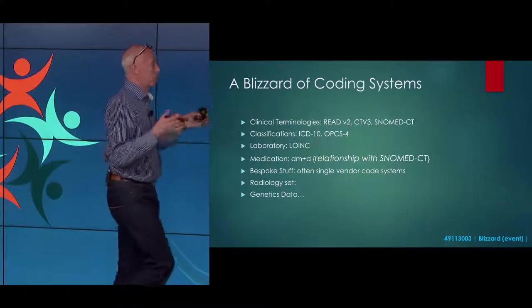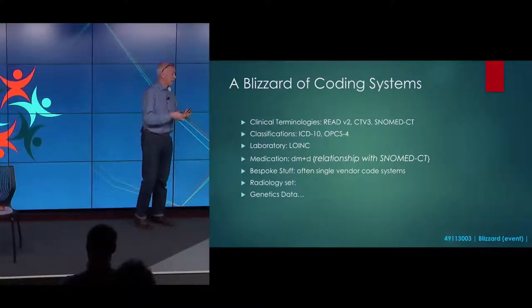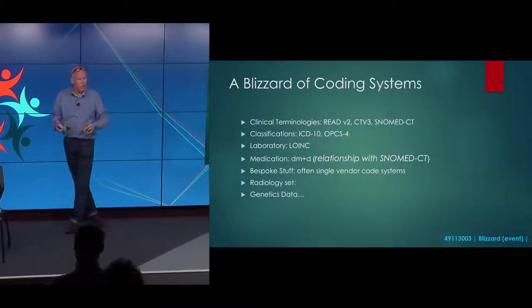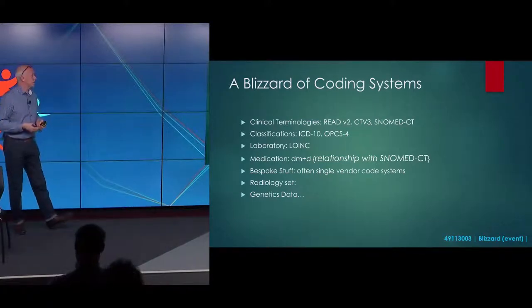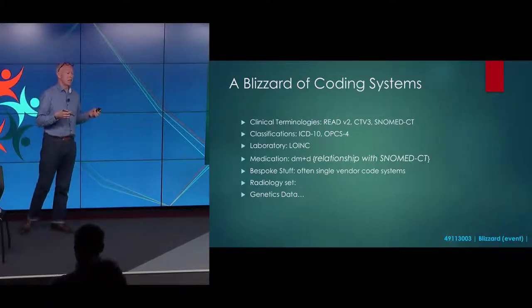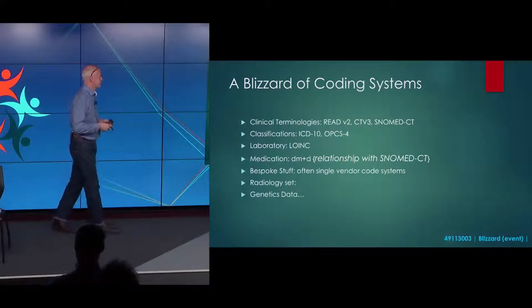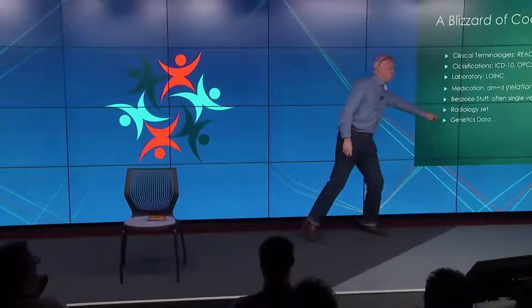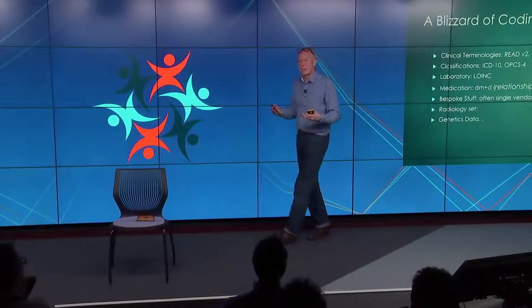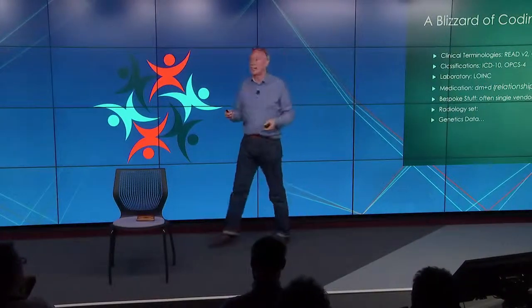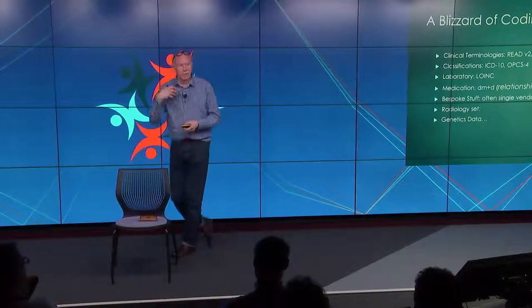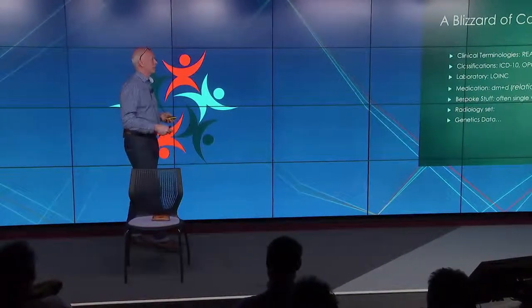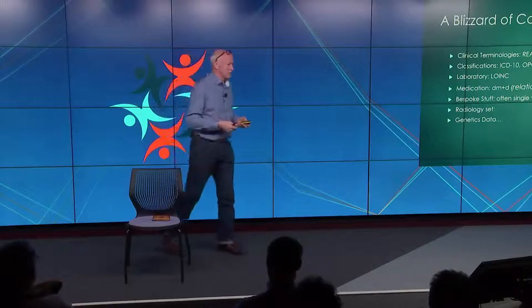There's a blizzard of coding systems out there. We have the clinical terminologies — Read Version 2, Clinical Terms Version 3, and SNOMED CT currently in use in the NHS. There are the classifications: ICD-10, OPCS-4. In a laboratory environment you might be using LOINC or your own bespoke system. For medication you might be using your own drug data dictionary or the UK standard DM&D — Dictionary of Medicines and Devices. I'm also interested in how we're going to represent the phenomenal richness of genetics data as it starts to flow into current terminologies.